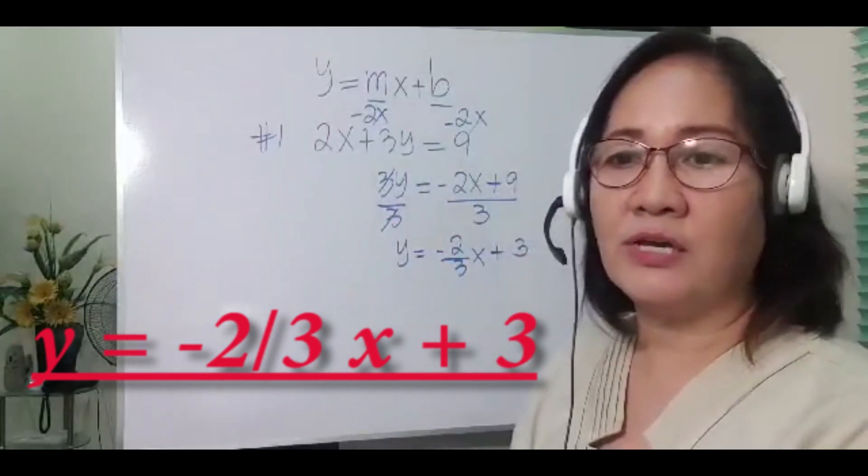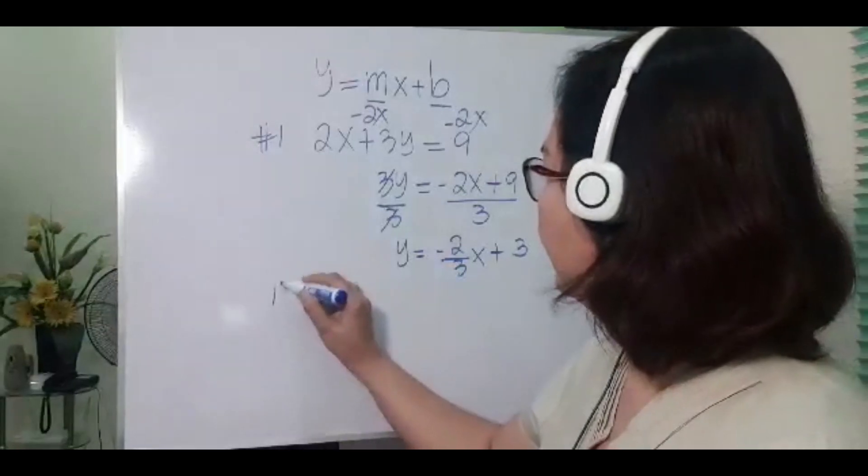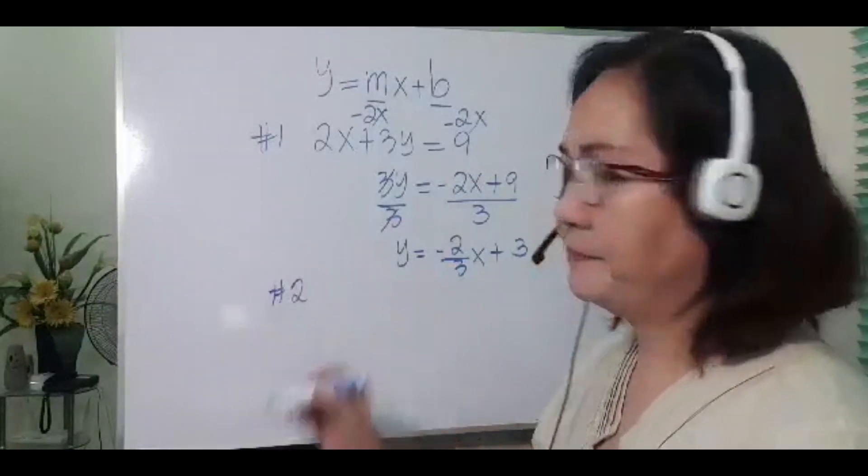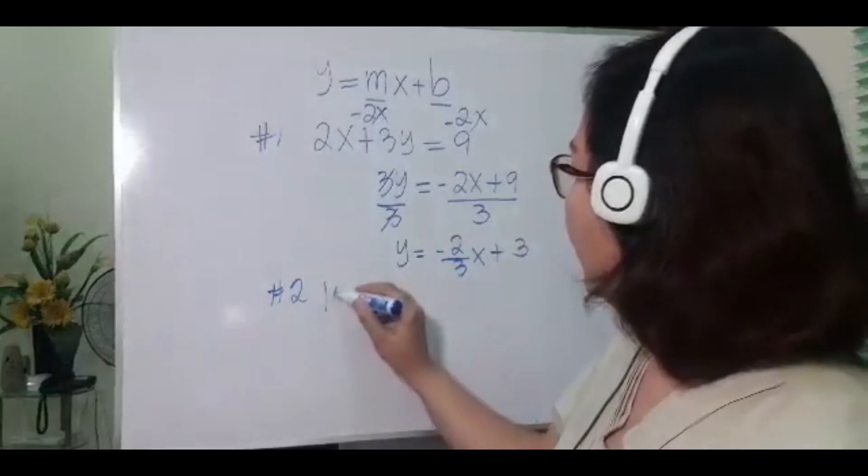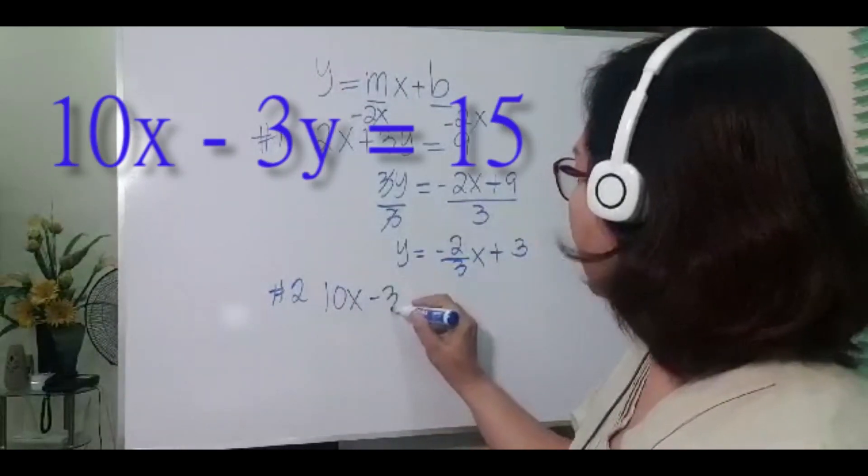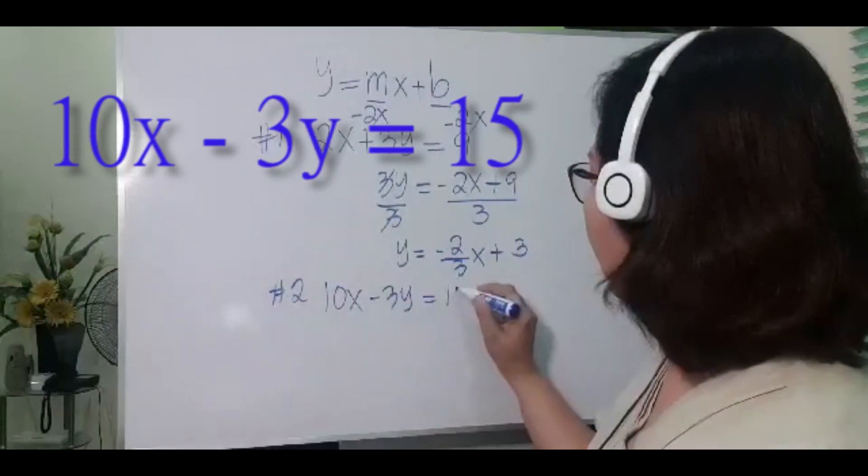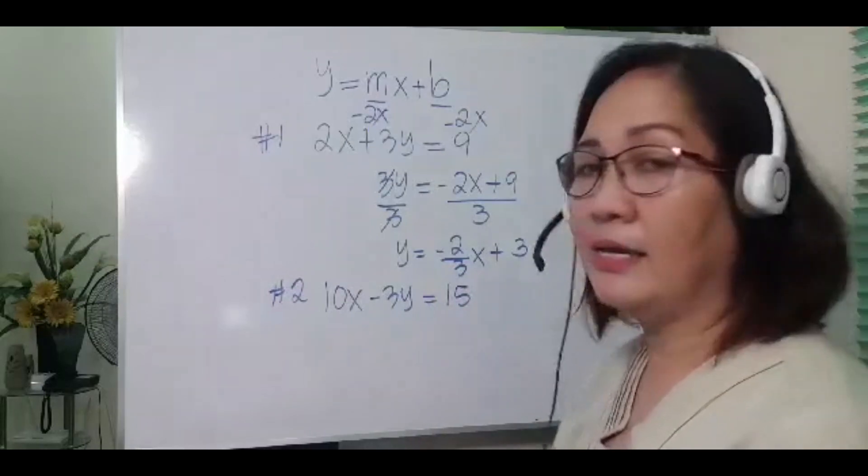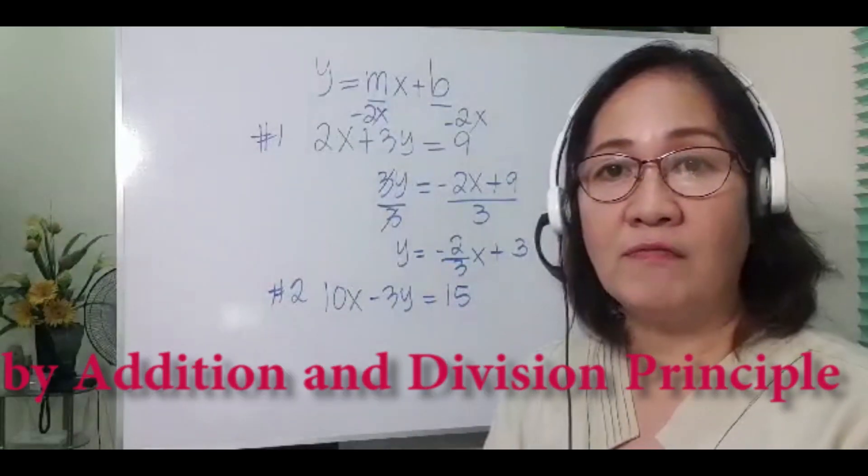Okay, let's have one more example. 10x minus 3y equals 15. Again, by addition and division principle,